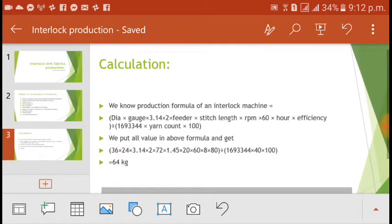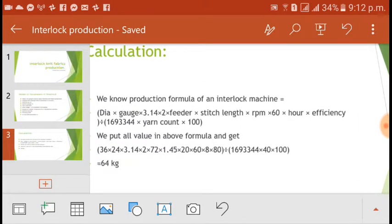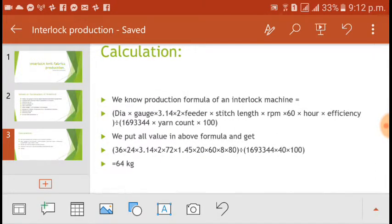We know production formula of an interlock machine equals (Dia × gauge × 3.14 × 2 × feeder × stitch length × RPM × 60 × hour × efficiency) divided by (1693344 × yarn count × 100).